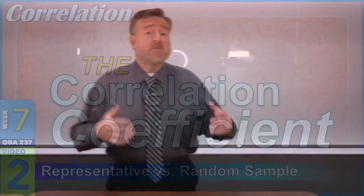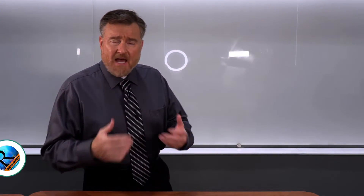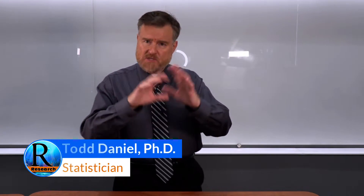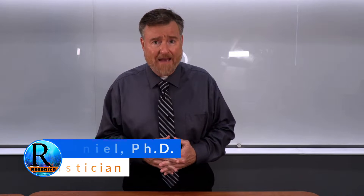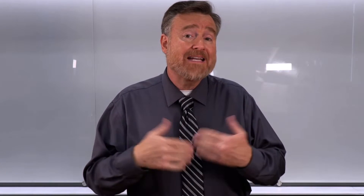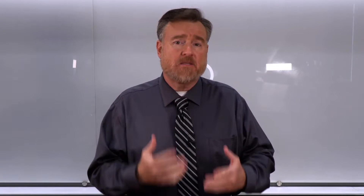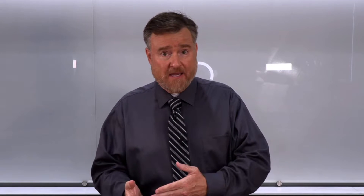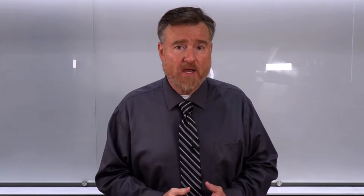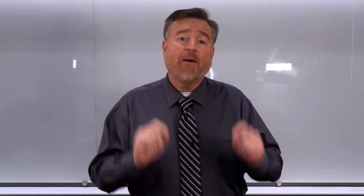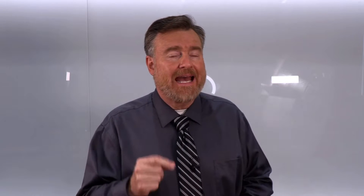In our discussion of descriptive statistics, I showed you how we can display our data in one of two ways: with numbers or with pictures, which we call graphs. When we look at a scatterplot, we see a depiction of the strength and direction of the relationship between our variables. However, to display our data as numbers, we want to create a correlation coefficient.